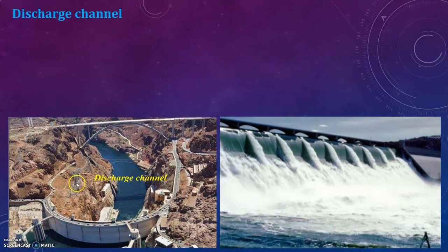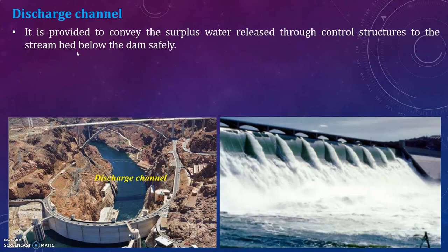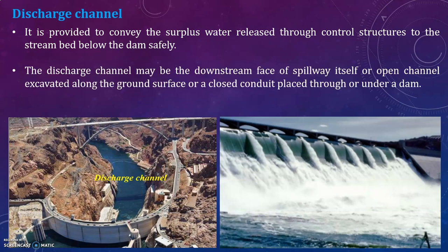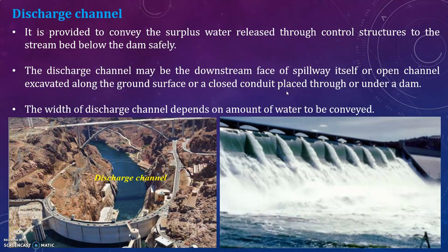The discharge channel is provided to convey the surplus water released through the control structure to the stream bed below the dam safely. The discharge channel may be the downstream face of the spillway itself, an open channel excavated along the ground surface, or an enclosed conduit placed through or under a dam. The width of the discharge channel depends on the amount of water to be conveyed.